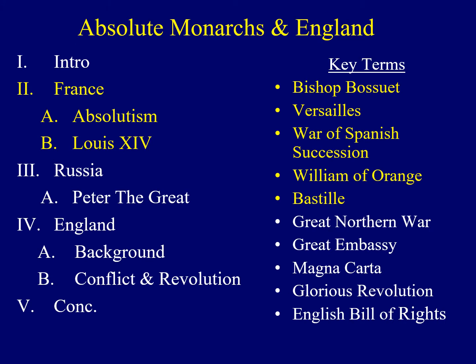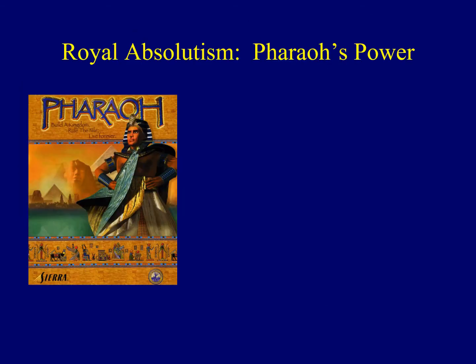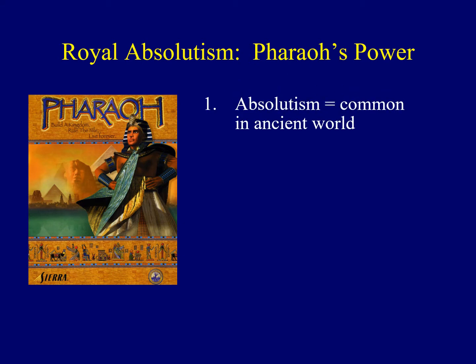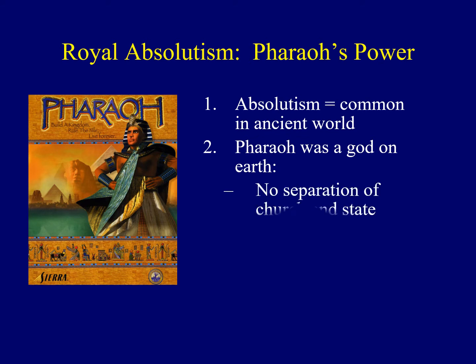Now that we've had a bit of background and introduction, I'd like to look at the history of absolutism and how it evolved in France. The idea of absolute monarchs having ultimate power was nothing new. In fact, it was quite common in the ancient world — common in both Mesopotamia, Egypt, and many other areas. The leader in Egypt was Pharaoh, and Pharaoh was a god on earth. There was no separation of church and state, and in ancient Egypt there was no need for written law. Whatever Pharaoh said became law immediately after he said it.